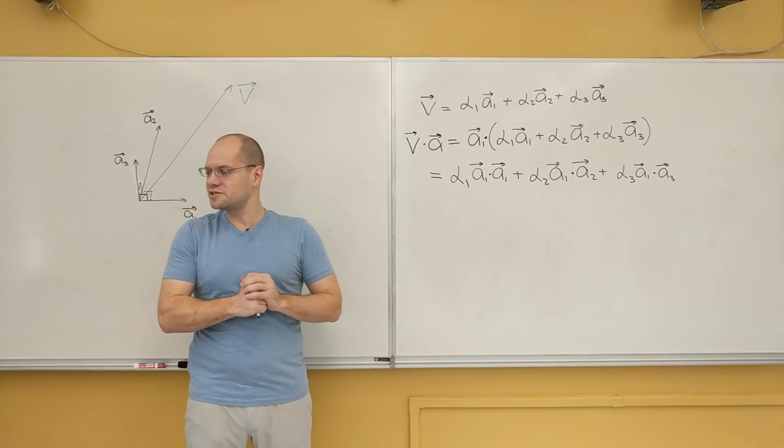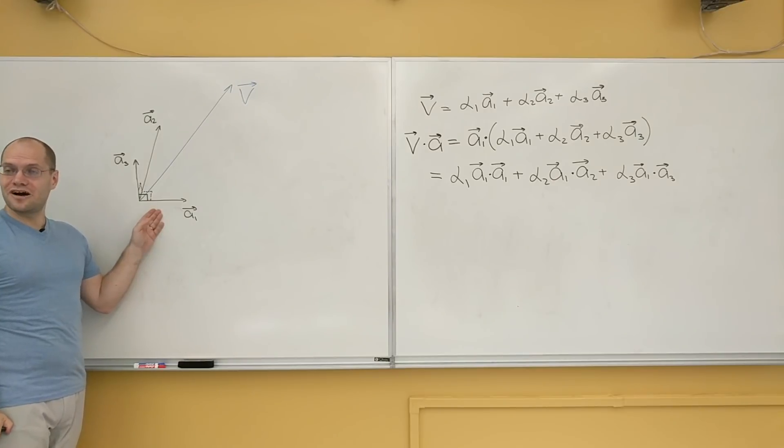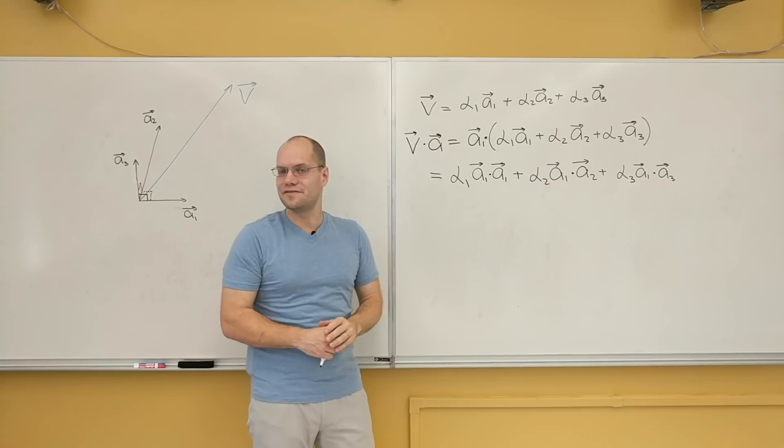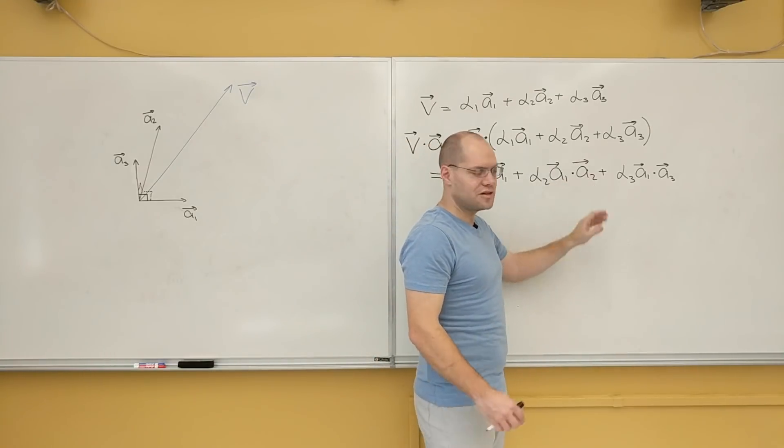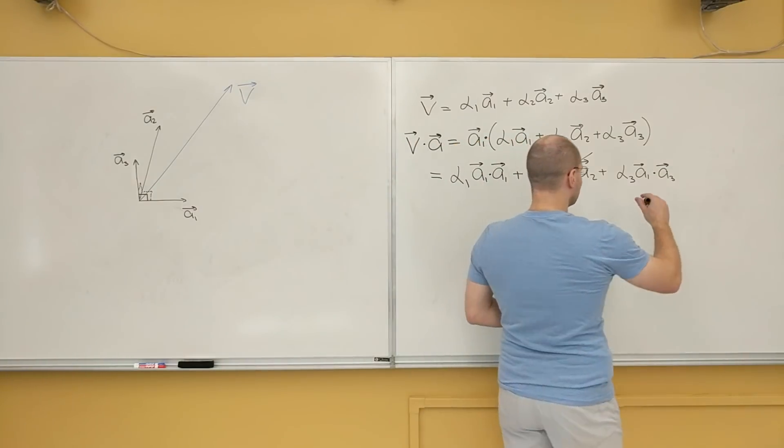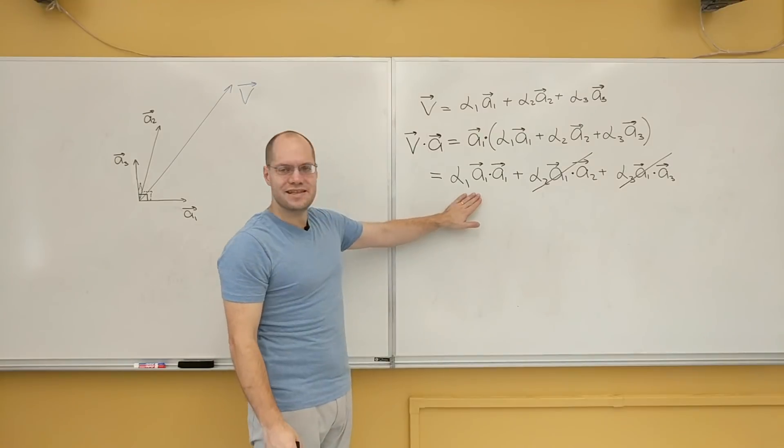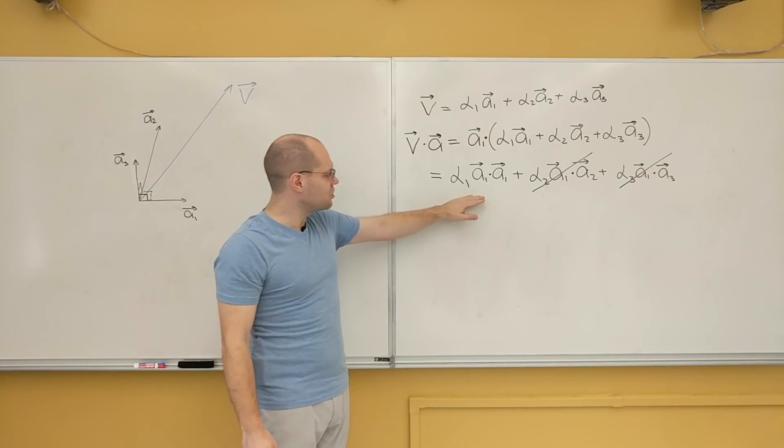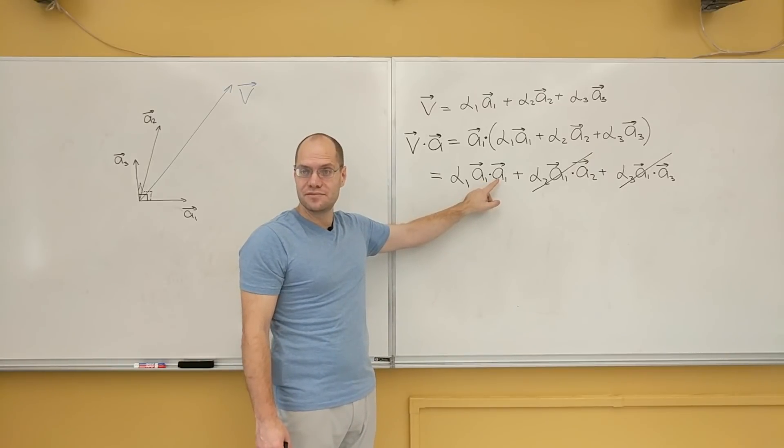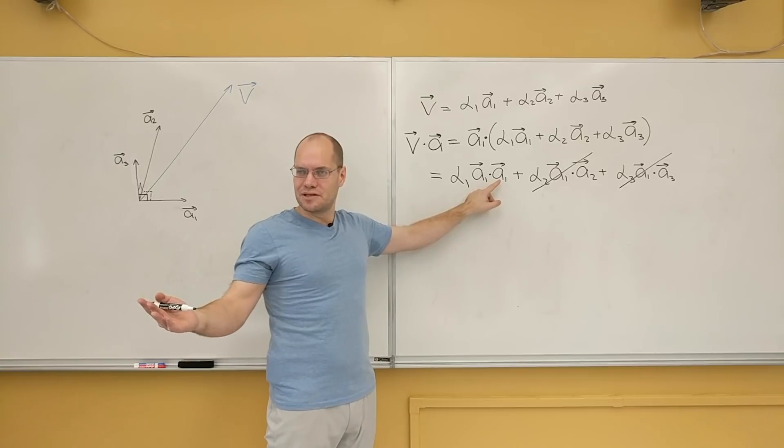What's the next thing we notice? Well, how do we take advantage of the fact that this set of vectors is orthogonal? That's right. Out of the three terms, only two survive. A1 is orthogonal to A2, so this is gone. A1 is orthogonal to A3, so this is gone. All that's left is just the term with alpha 1. So we can divide both terms by A1 dotted with A1, divided by that number. And how do we know that that number is not zero?